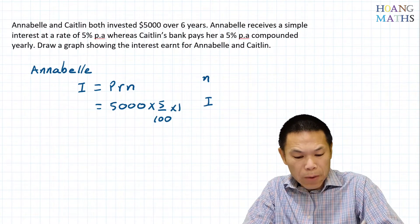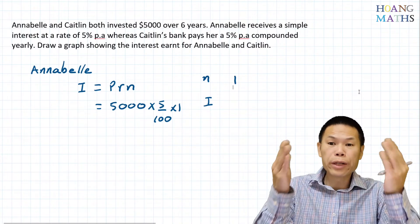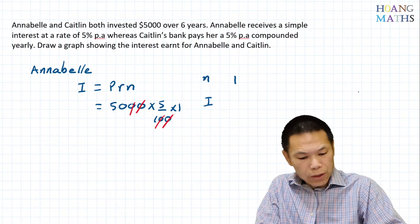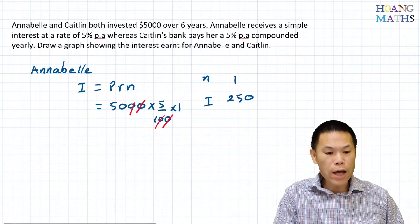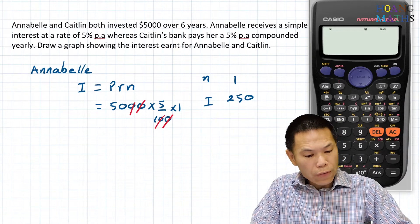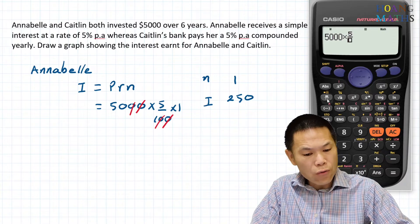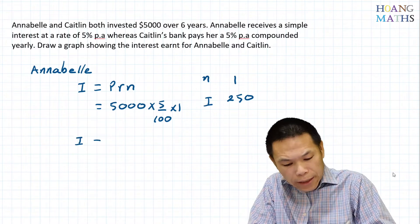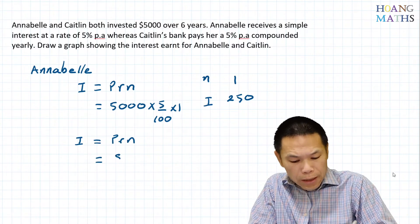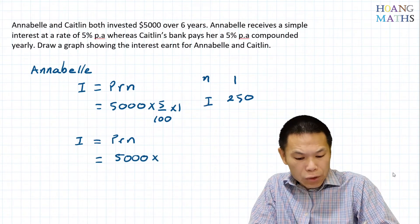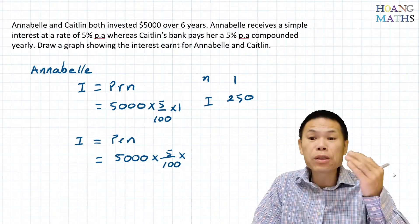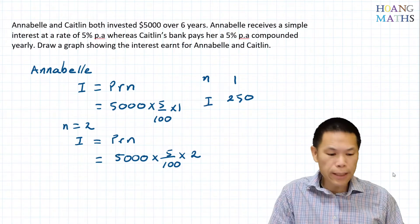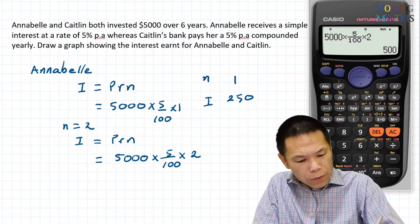For year 1: I = 5,000 × (5/100) × 1, which gives $250. For year 2: N = 2, so I = 5,000 × (5/100) × 2, which gives $500.